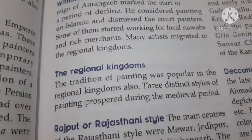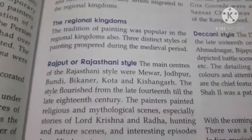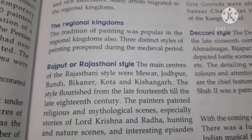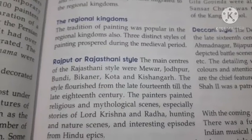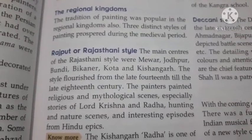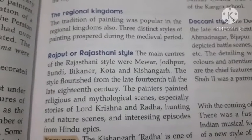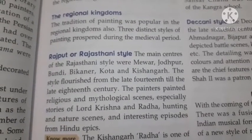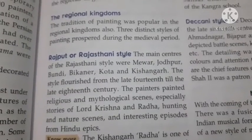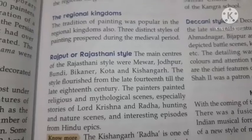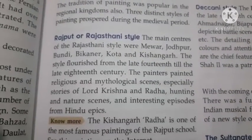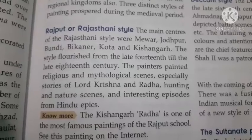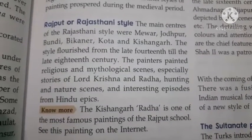Three distinct styles of painting flourished during the medieval period. The first is the Rajasthani or Rajput style. The main centers were Mewar, Jodhpur, Bundi, Bikaner, Kota, and Kishangarh. This style flourished from the late 14th to the late 18th century. The painters painted religious and mythological scenes, especially stories of Lord Krishna and Radha, hunting scenes, nature scenes, and episodes from Hindu epics.